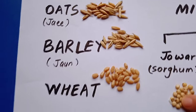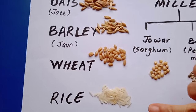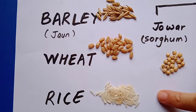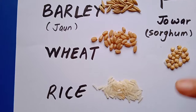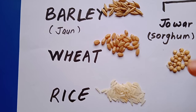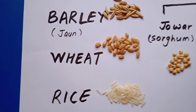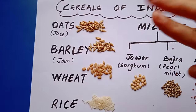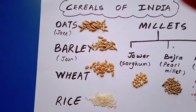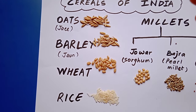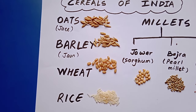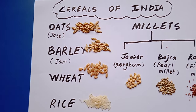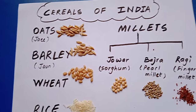Then we have rice cereal - we all use it quite often in our cooking, so we are aware of it. Then another important cereal is maize, that is corn - makki, as we call it in Hindi. You are all aware that makki is an important cereal that we eat.